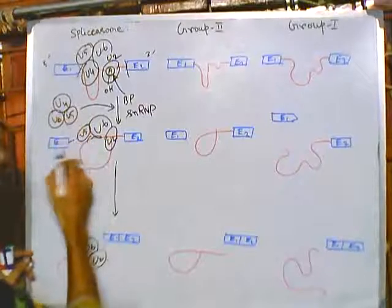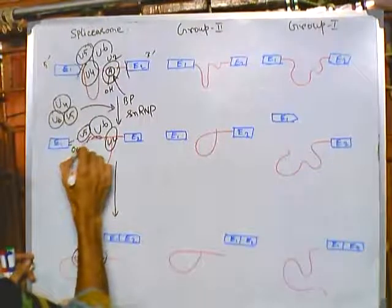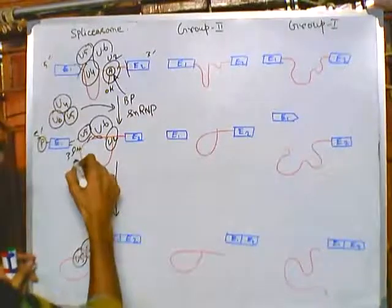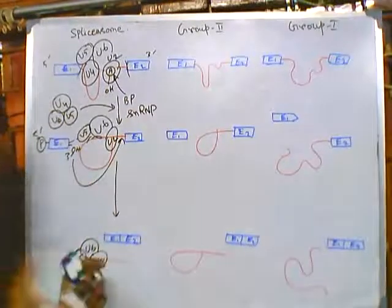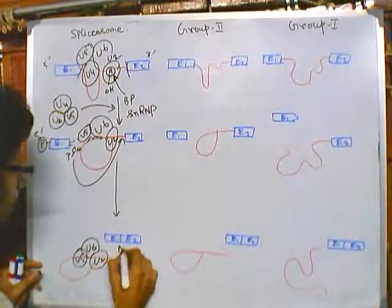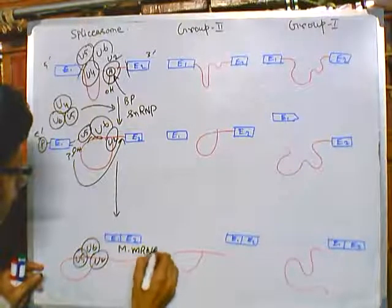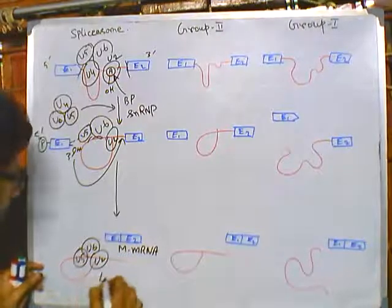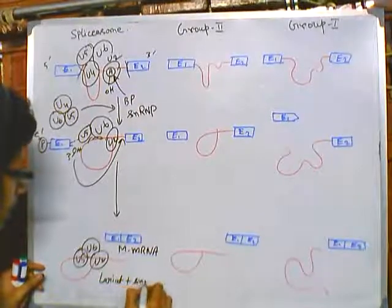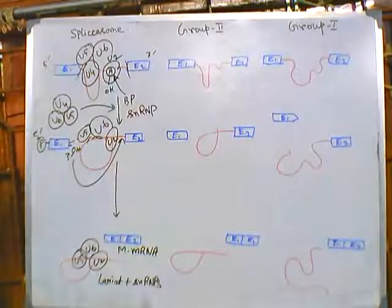They form a complex to produce this bent lariat-like structure. When it is produced, U5 is holding onto E1. E1 has two regions: a hydroxyl region at the 3' end and a 5' phosphate. Using the 3' hydroxyl, it can attack the 3' splicing site, and then it will generate the mature mRNA along with the lariat with snRNPs. This is the process of spliceosome-mediated splicing.